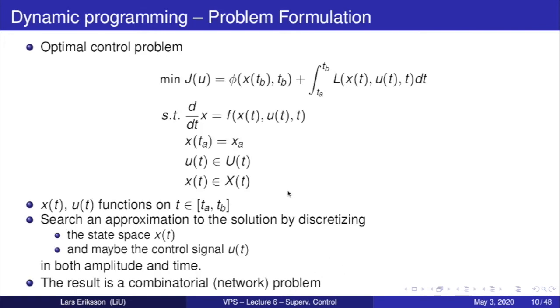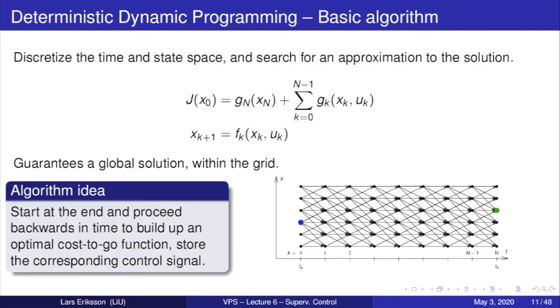When we're going to solve this optimal control problem, we can use dynamic programming as we have been working with in hand-in assignment number two. There you have set up the problem formulation. You search an approximation to the solution by discretizing the state space and also maybe the control signal in both amplitude and time. And the result is a combinatorial network problem, and the network you see here. The problem is to take us from starting point to the end point. You know now that the algorithm idea is that you start at the end and then we proceed backwards in time, and we build up an optimal cost-to-go function. That cost-to-go function we later use to unwind the solution and to get information about what's the best way of reaching the end point.